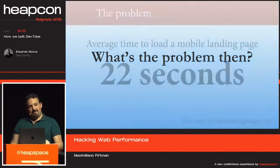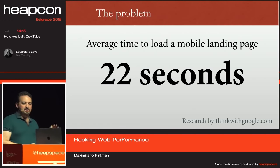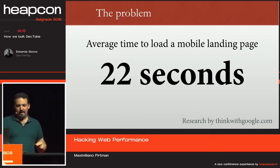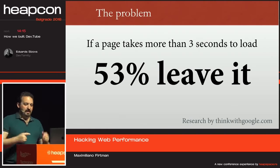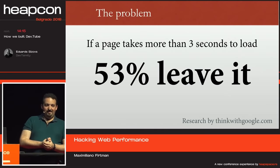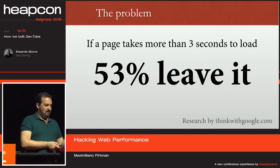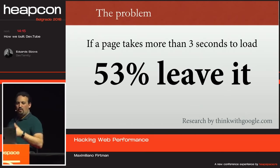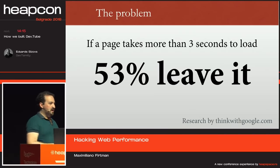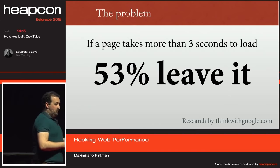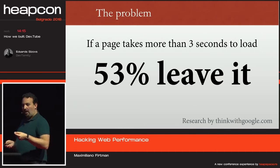The problem is, even with all those techniques, the average time to load a mobile landing page today is 22 seconds — really far away from our goals. This is from Google. If a page is taking more than three seconds to load, more than half of users will start leaving. You're losing users, losing conversion, losing money. We're not doing web performance just to measure with a clock — we're doing it for conversion.